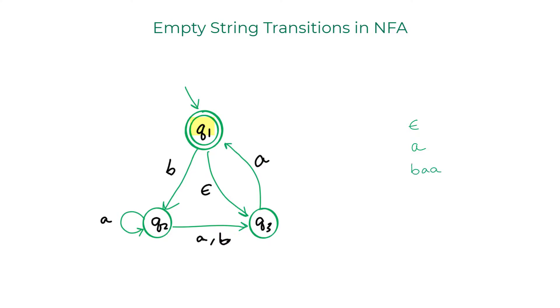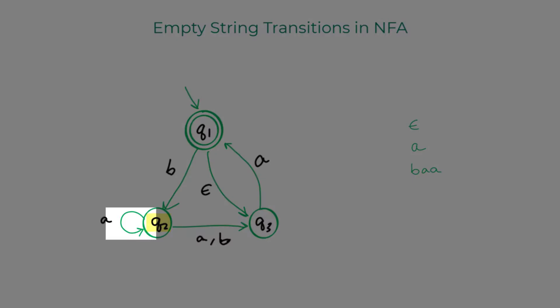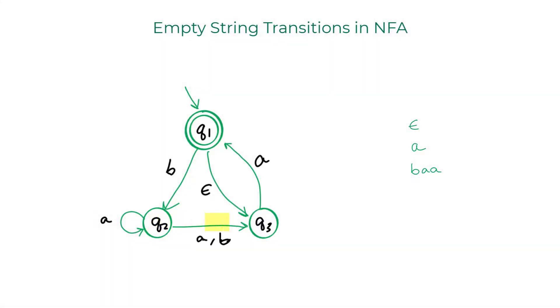How about BAA? We trace it this way. So, we go to Q2. Instead of using the transition on A here, I will use the transition right here and move closer towards the accept state. With another A, I reach the accept state. So, BAA is in the language of this NFA.